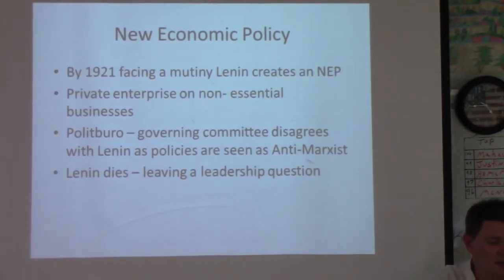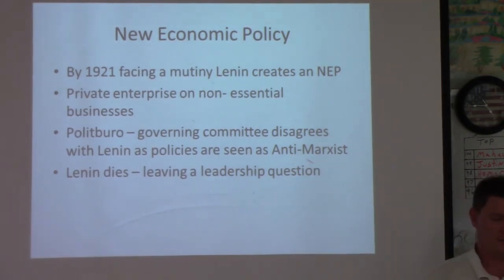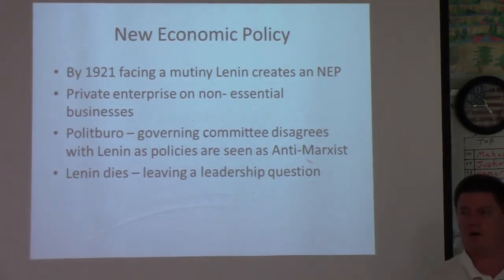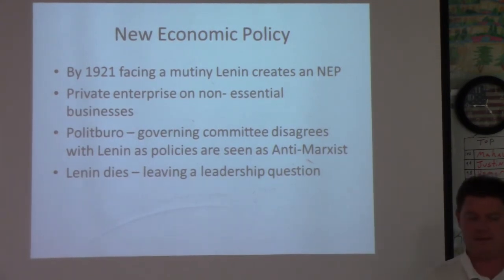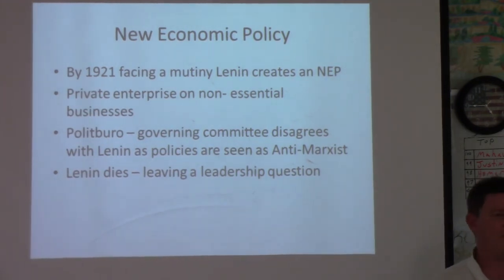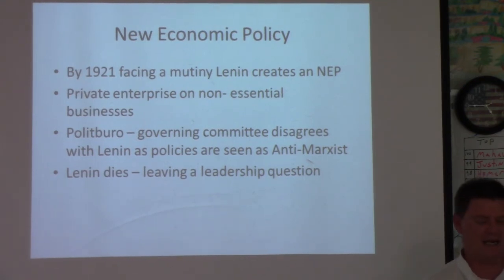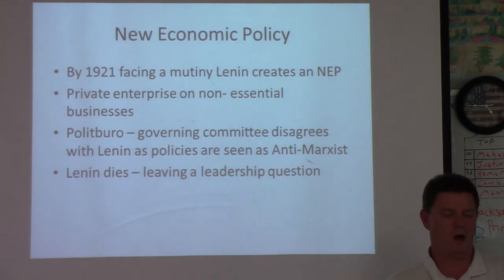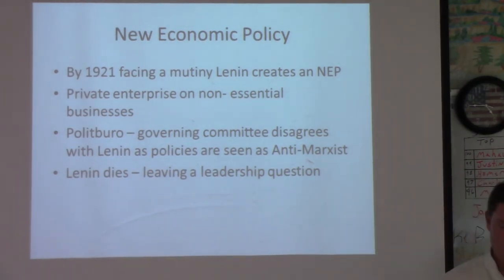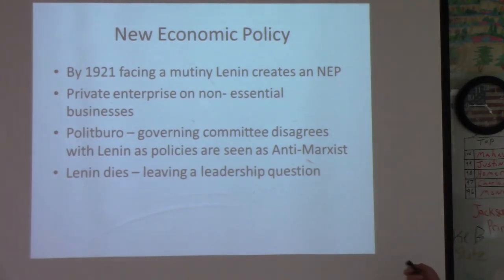In 1922, his government created a new constitution where all political power and all resources for production belong to the worker. Anyone over the age of 18 could vote. However, it was all an illusion — it was Lenin and his Communist Party who ran the show. On December 30th, 1922, Russia became known as the Union of Soviet Socialist Republics.